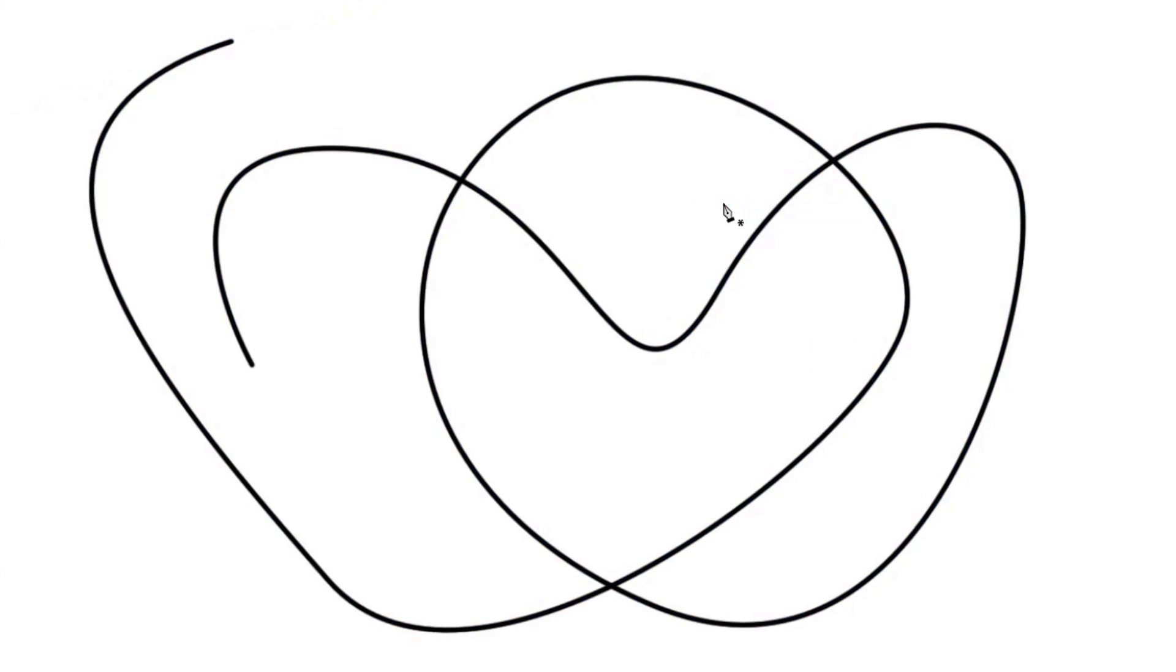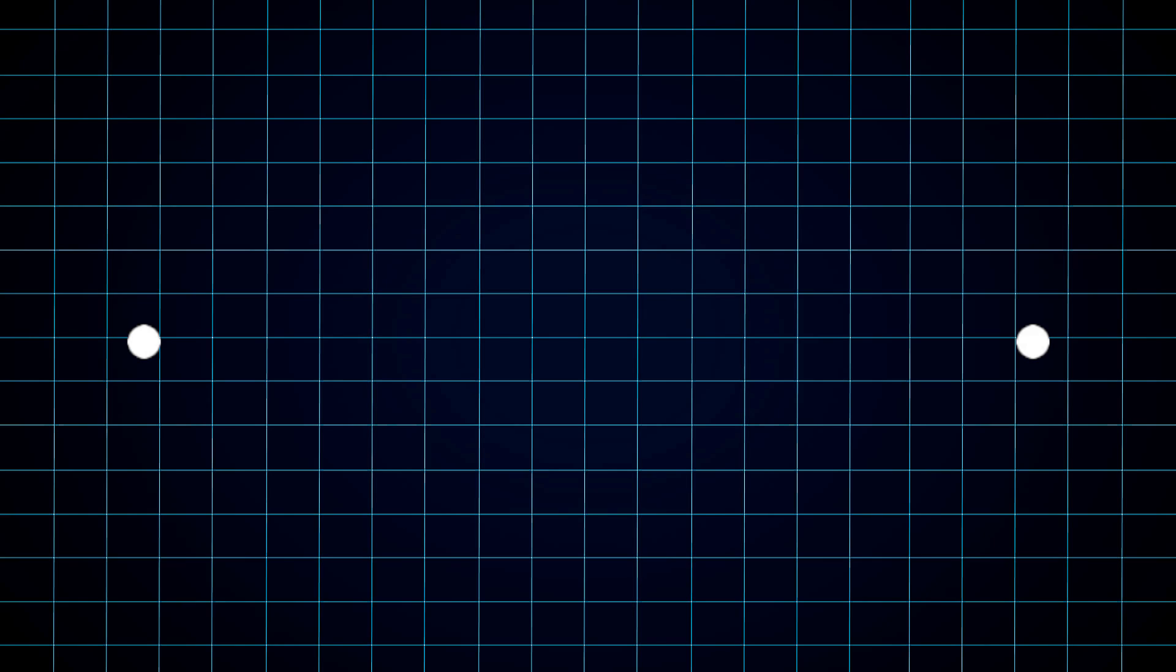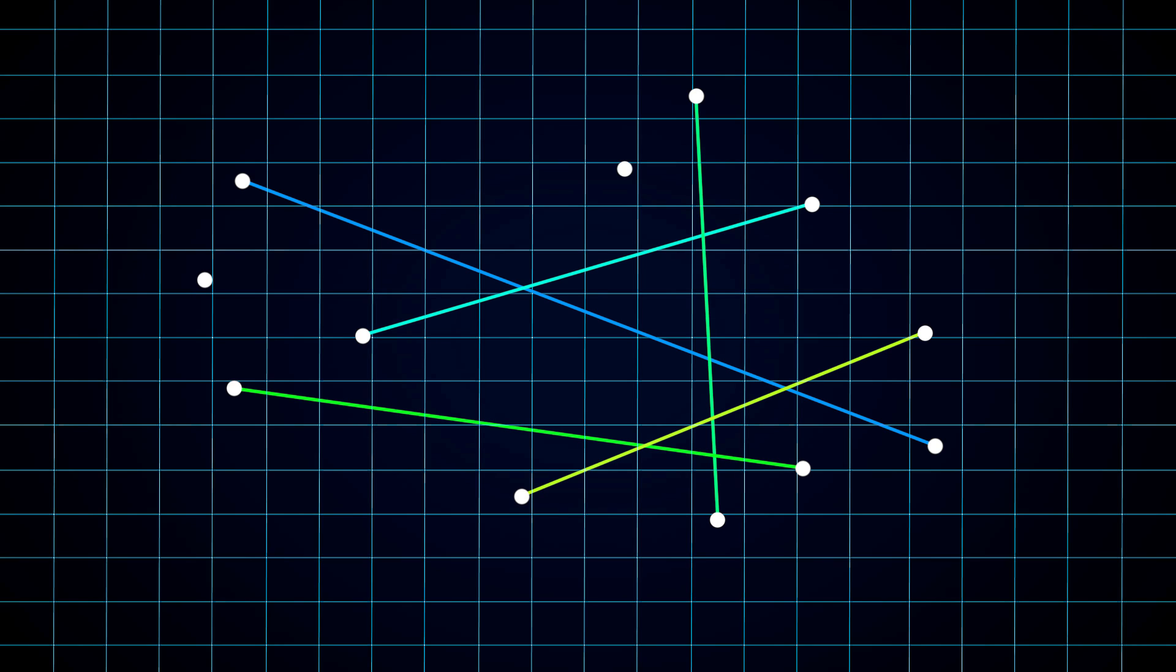To understand how to generate curves, let's first begin with straight lines. Drawing a straight line is simple, all you need are two points. The shortest path between them is always a straight line, and for any two given points there's always only one possible straight line connecting them.